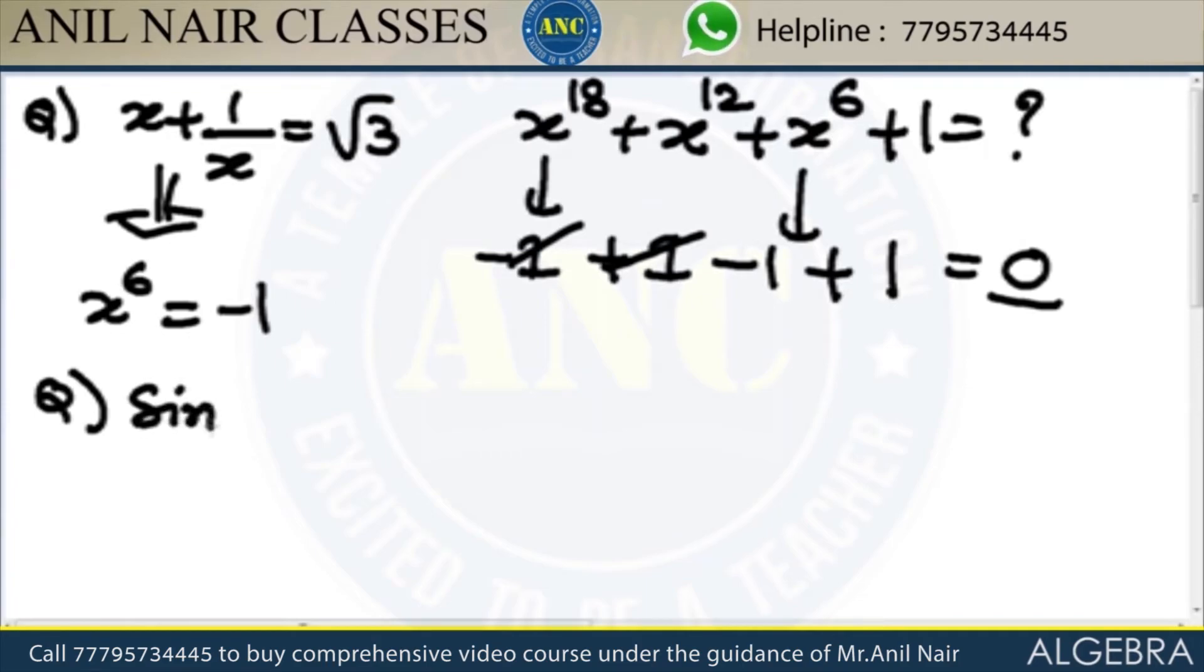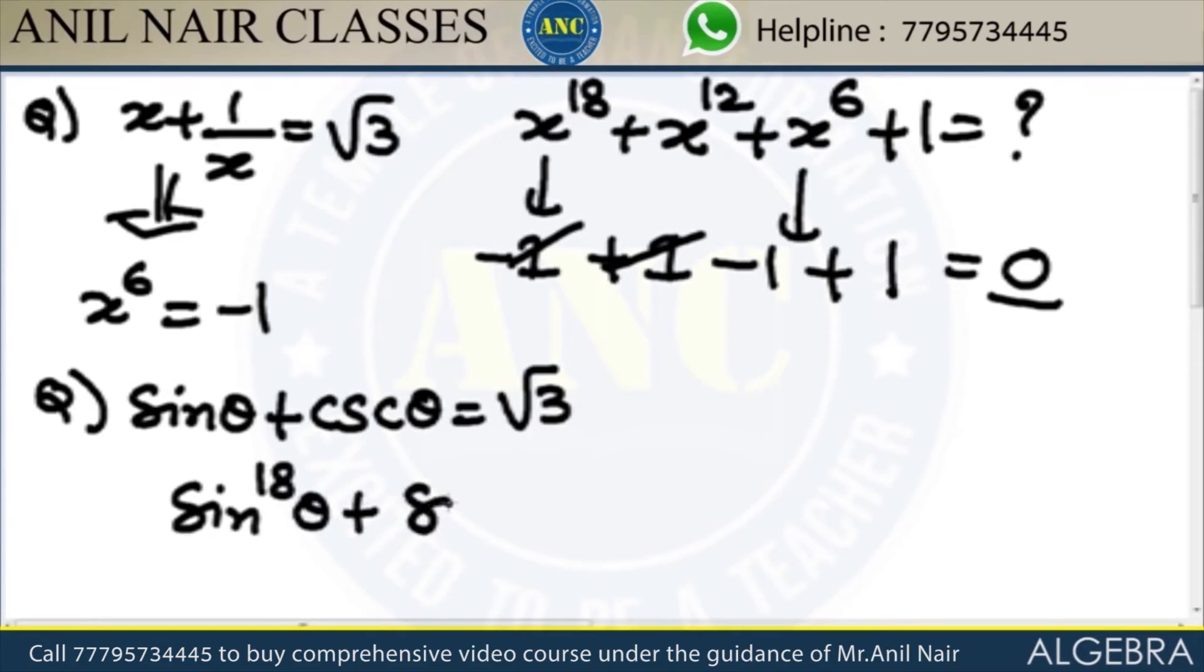Same model, they can also ask like this. Sin theta plus cosecant theta equivalent to root 3. Find the value of sin power 18 theta plus sin power 9 theta plus sin power 6 theta.